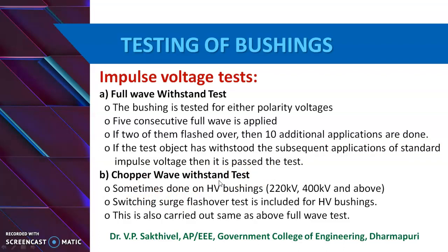The chopped wave withstand test is sometimes done for high voltage bushings rated 220 kV and 400 kV and above. Additionally, the switching surge flashover test is included for high voltage bushings, and this is carried out in a similar manner to the full wave withstand test.